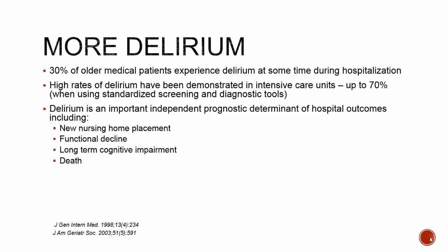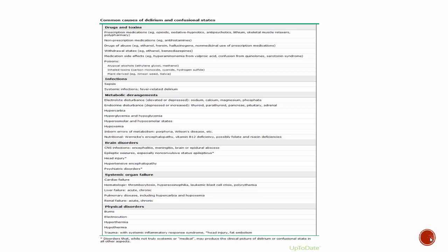Why do we care about delirium? It can affect up to 30% of older medical patients during hospitalization, and rates in the ICU can be as high as 70% when using standardized screening and diagnostic tools. It is a prognostic determinant of hospital outcomes, including first-time nursing home placement, functional decline, long-term cognitive impairment, and possibly death.